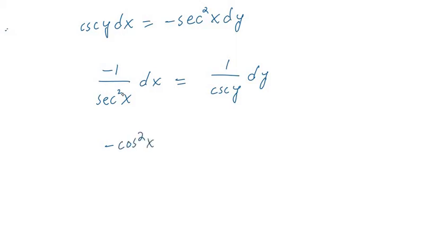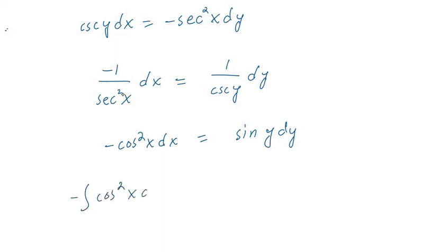From here you can apply a rule of trigonometric functions, and according to that you can write minus this term as minus cos squared X dx, while you can write this side as sine Y dy. Now you can take integrals on both sides — taking the minus outside, you will have the integral of cos squared X dx on one side and the integral of sine Y dy on the other.